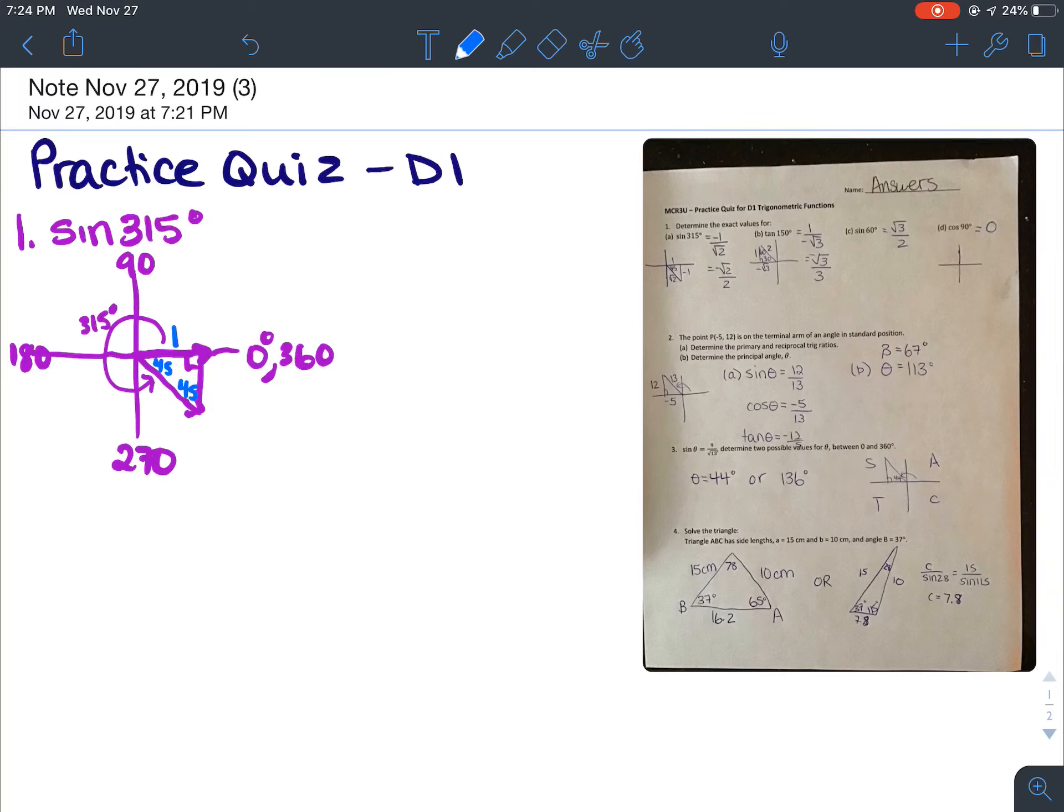So we can label our sides 1, negative 1, root 2. So the exact value of sine 315 degrees, because sine is y over r, would be negative 1 over root 2. And that makes sense according to our cast rule. Because according to our cast rule, cosine is the only positive ratio in quadrant 4. So that makes sense. If you're rationalizing the denominator, then you would get root 2 over 2, because you multiplied the top and bottom by root 2.